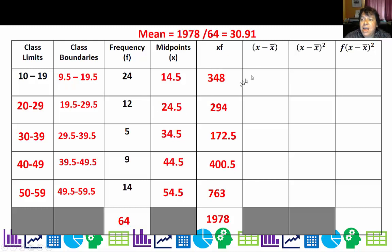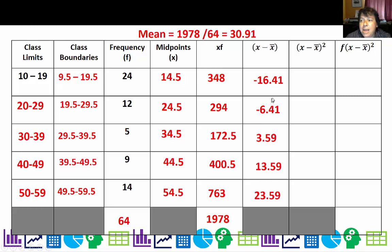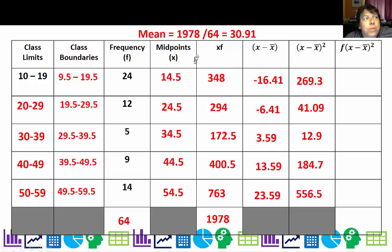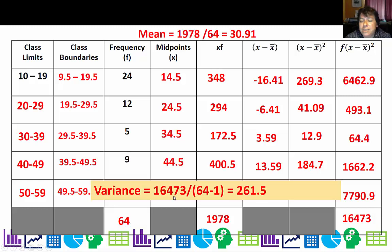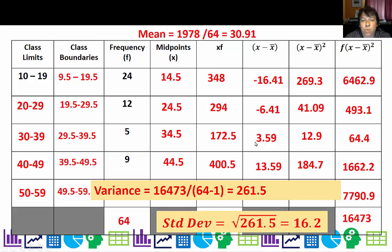Let's go ahead and do the deviation, also using the midpoints. So 14.5 minus 30.91, then 24.5 minus 30.91. Like before, it always starts negative and then goes positive if the values are in order. Then I square them just like before, then multiply each squared deviation by its frequency. Finally, I total it up. To find the variance, I divide by n minus 1: 16,473 divided by 64 minus 1, giving a variance of 261.5. The standard deviation is the square root of that, which is 16.2.